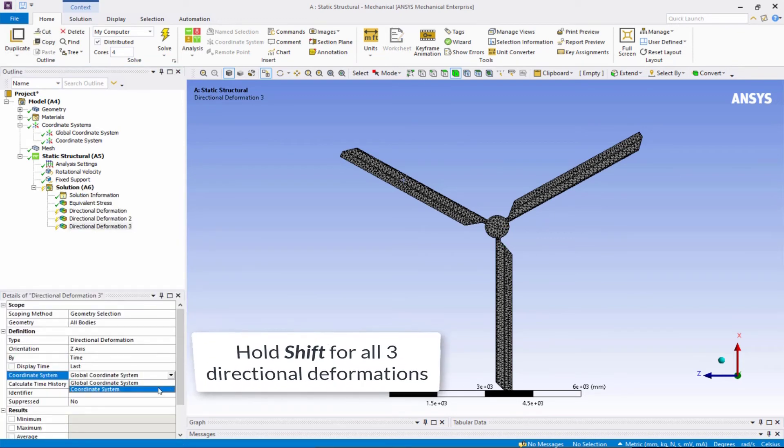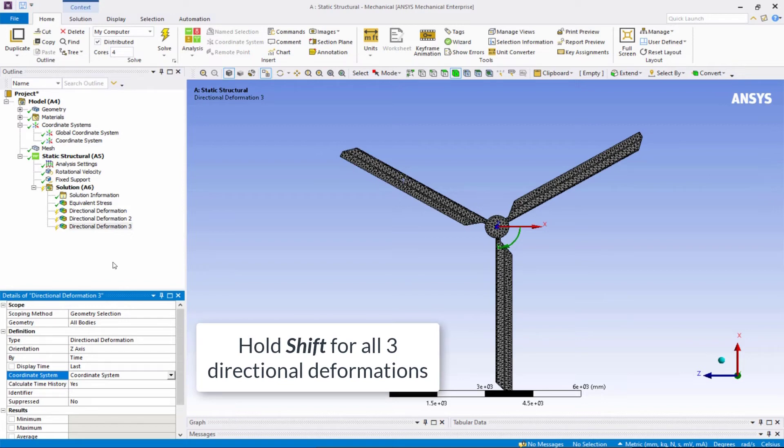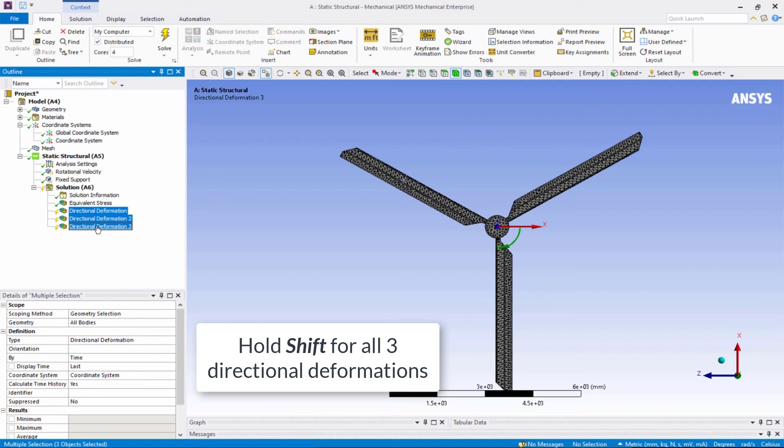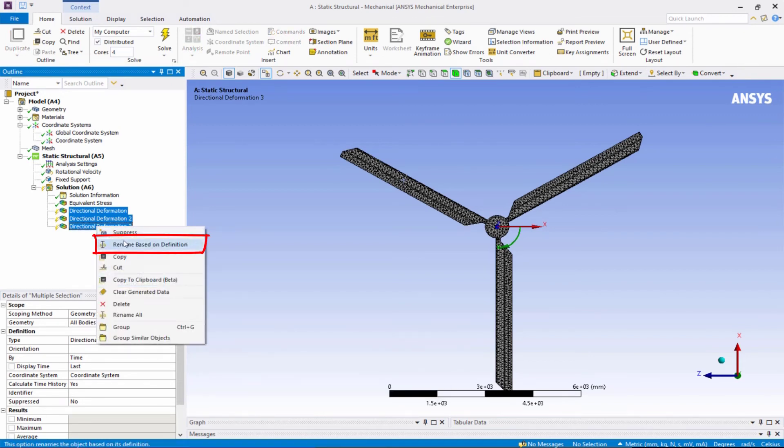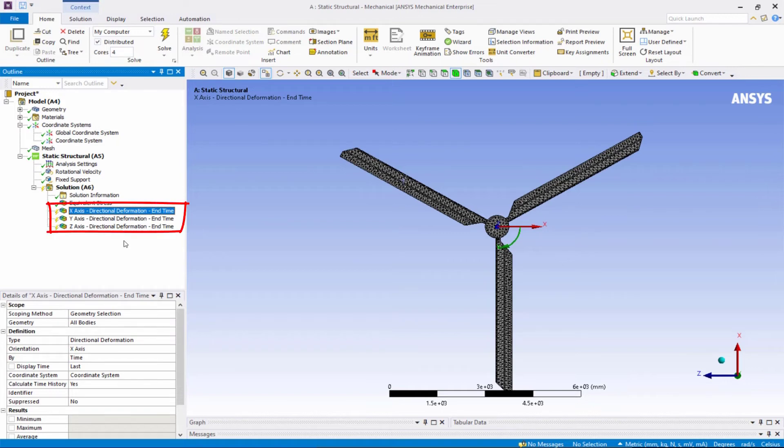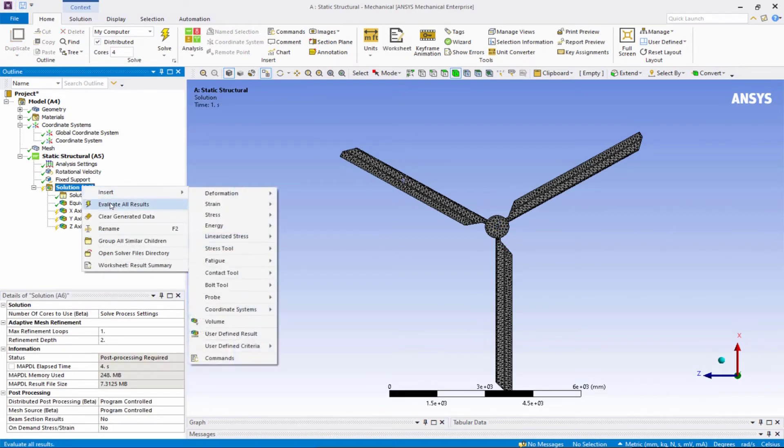We can hold the Shift button and select the X, Y and Z directional deformations that we just inserted and then right-click to rename based on definition. This will make it easier to identify each result object. Right-click and evaluate all results to view all directional deformations.